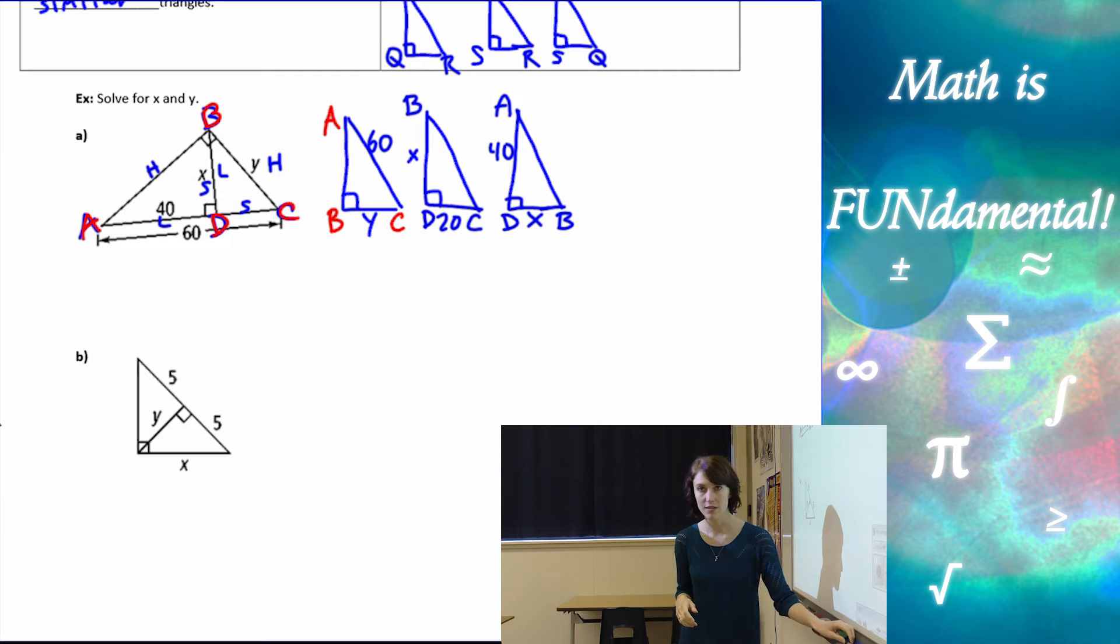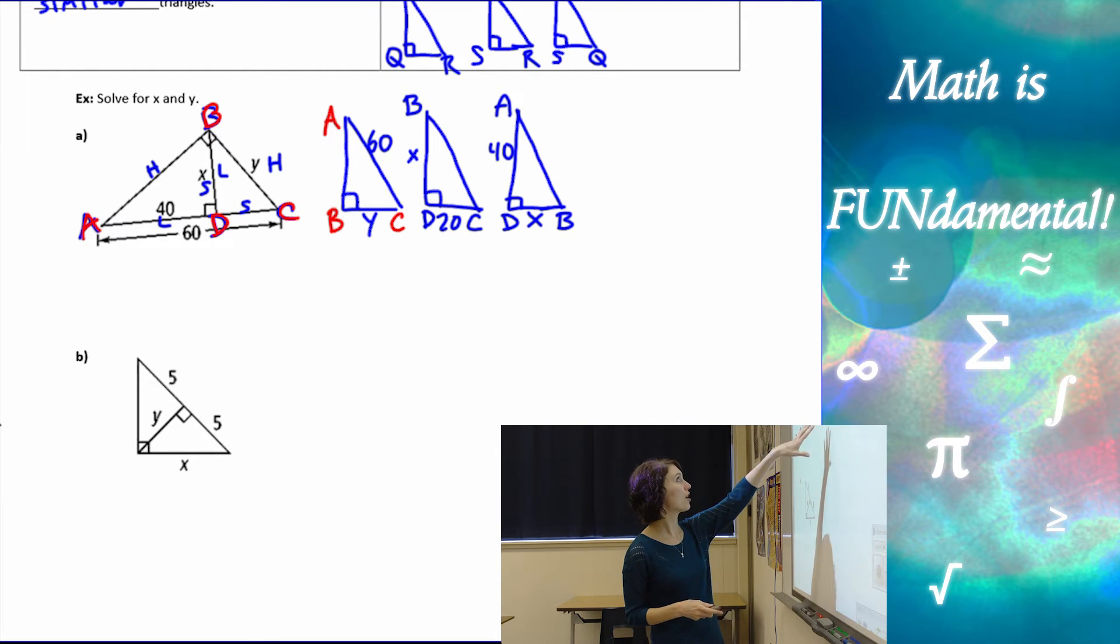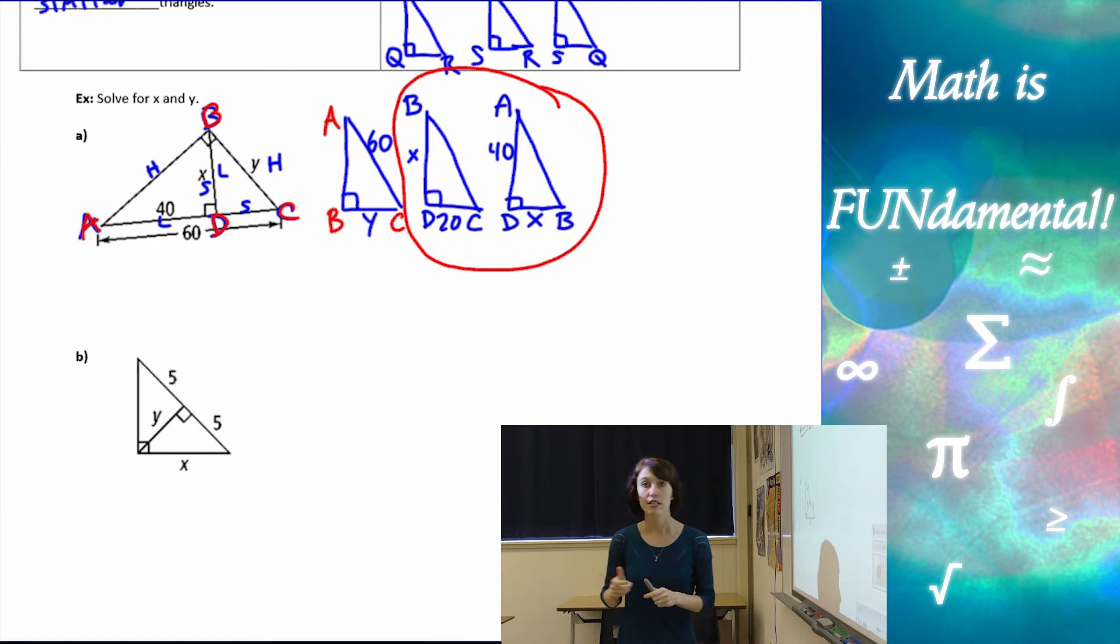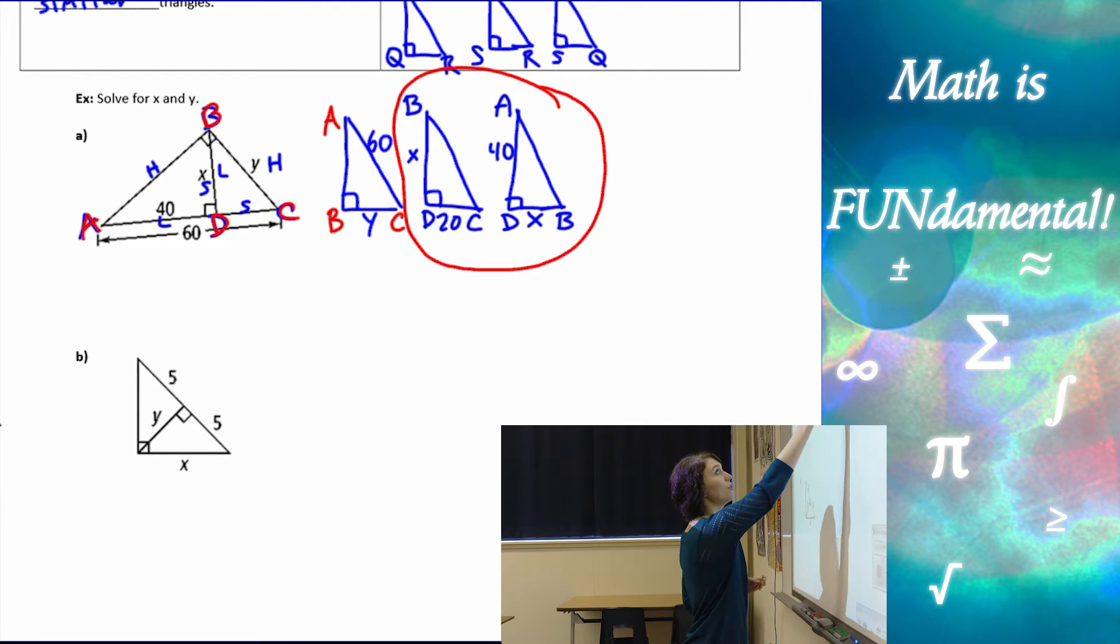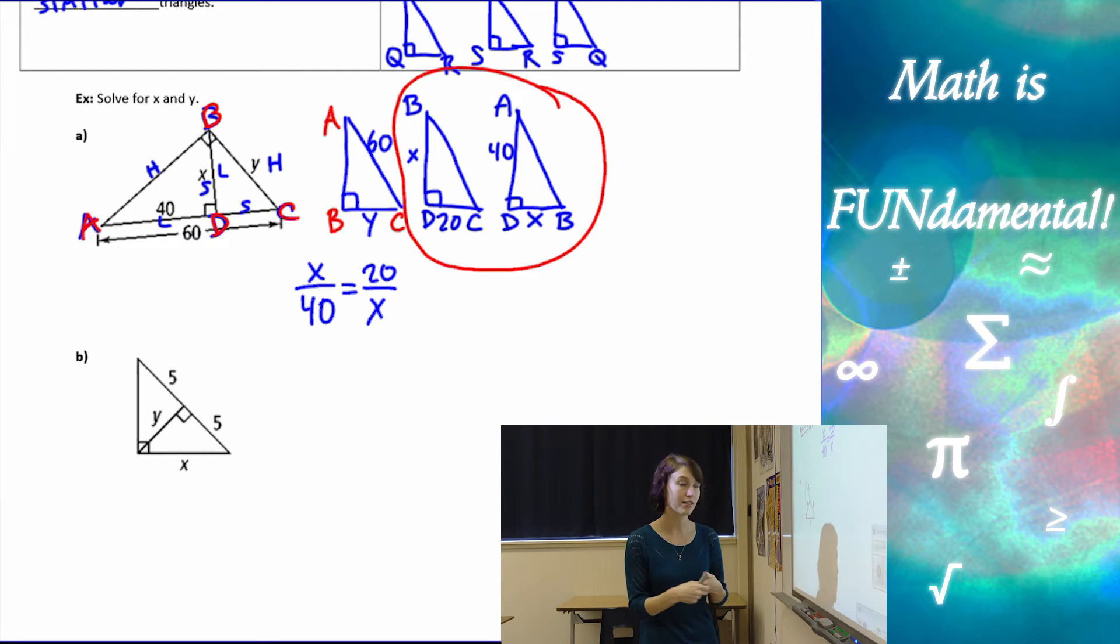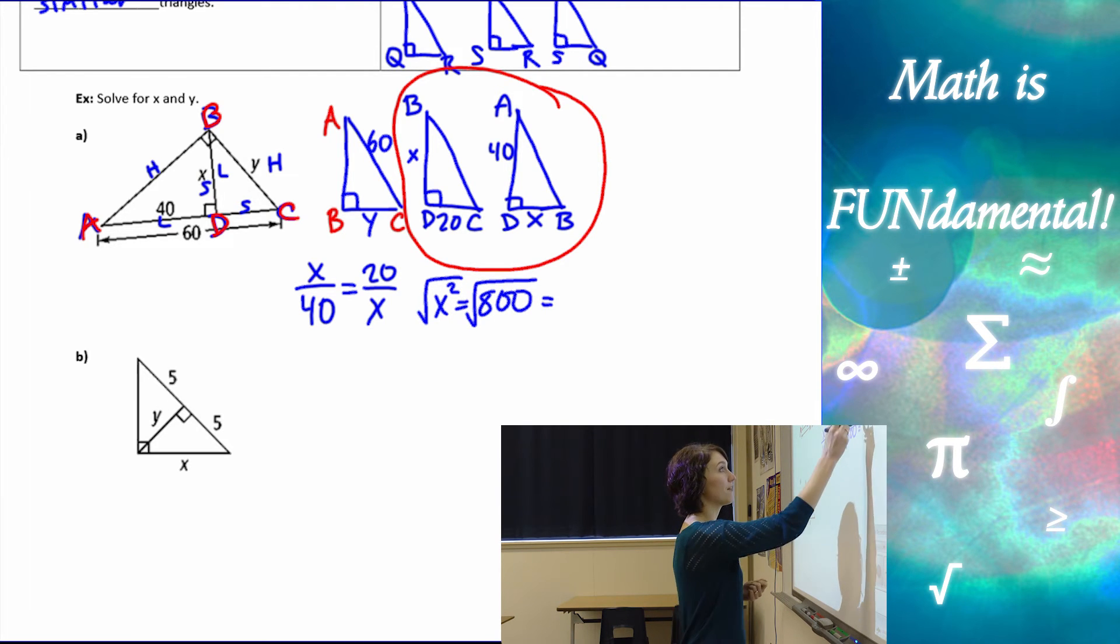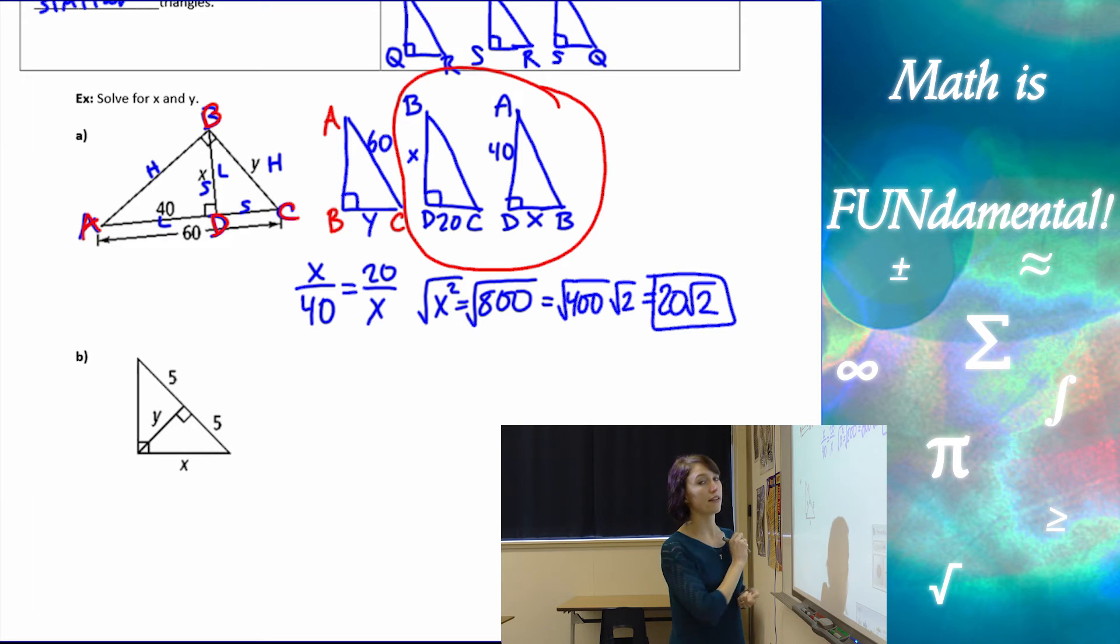So now what we want to do, once we have all of our information on our graph, we want to look at which two triangles have matching corresponding parts. So if we look, the large triangle, we have the hypotenuse, but I don't have the hypotenuse for the other two. So I'm going to use these two triangles to make my proportion and solve for X. So I have X over 40 equals 20 over X. X times X is X squared. 40 times 20 is 800. And then to solve for X, we square root. I've got the square root of 400 times the square root of 2. And the square root of 400 is 20 root 2.